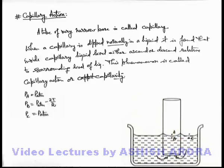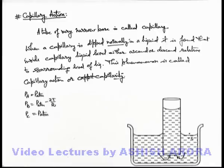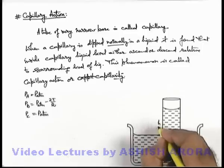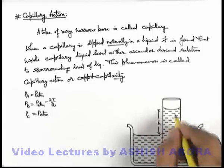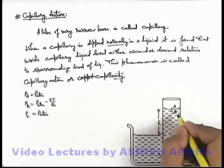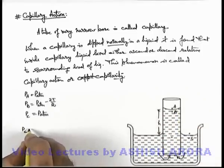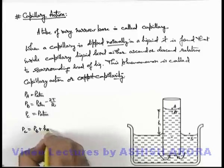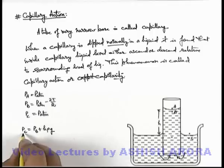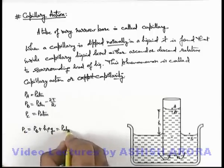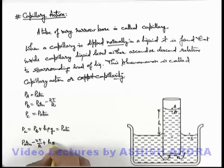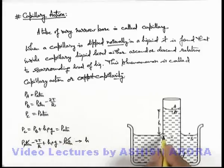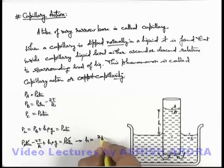The liquid rises up to a height h. The pressure at the level of C can now be written as: pressure at B plus h·ρg, and this must equal P_atm. Since pressure at B is P_atm − 2T/R, we get: P_atm = (P_atm − 2T/R) + h·ρg. Therefore the height h = 2T / (R·ρ·g), where R is the radius of curvature.